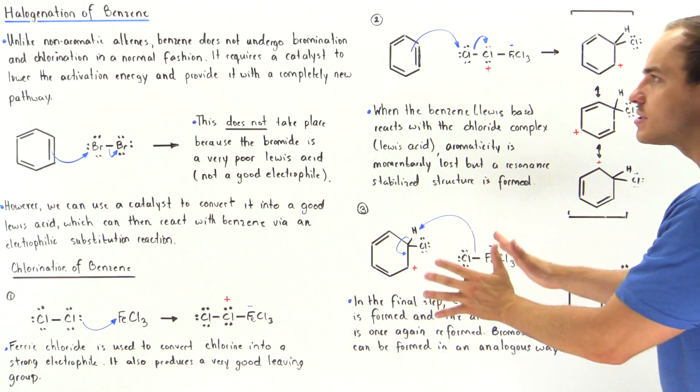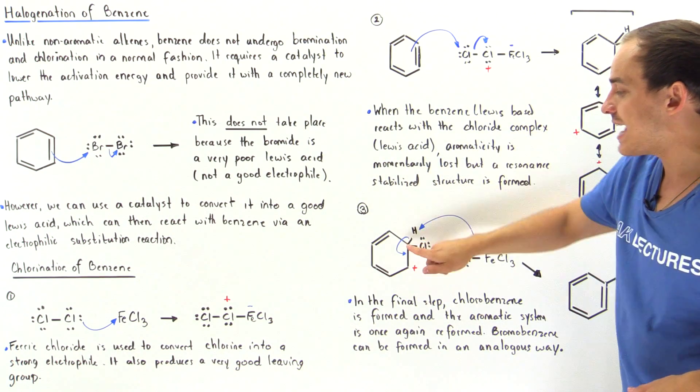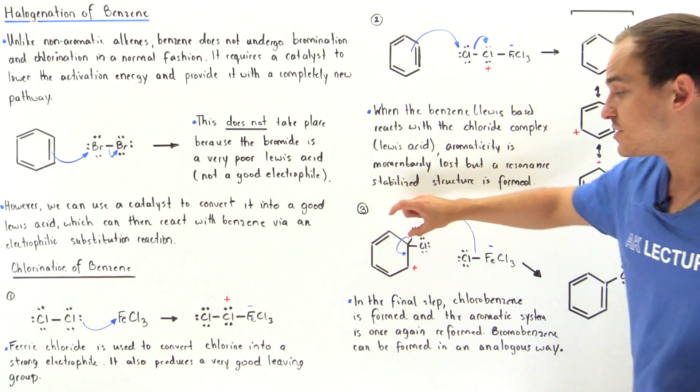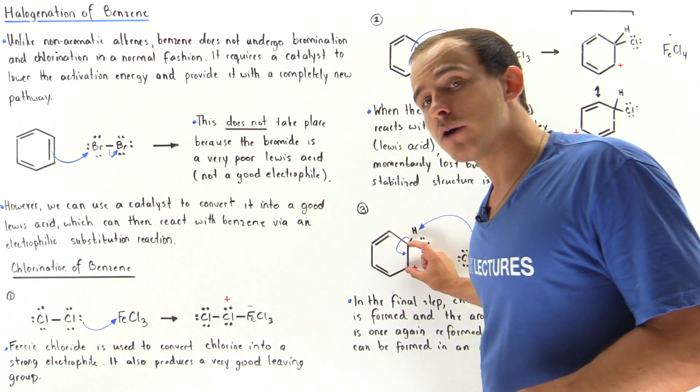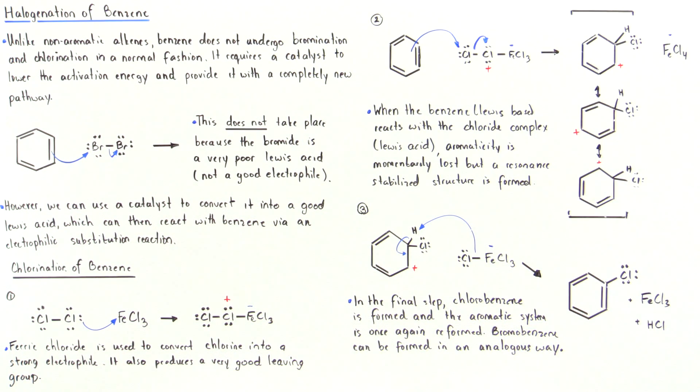In the third step of the chlorination of benzene, this molecule which contains the extra chloride reacts, and this H atom attached to the carbon is taken away. These two electrons basically form a pi bond between these two carbon atoms, and that reforms our aromaticity.